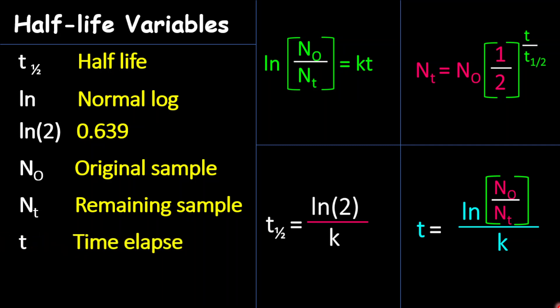What you notice as well, looking through the formulas, you will see t. And t is time elapsed, which means the amount of time passed, or the amount of time taken for the sample to decay.